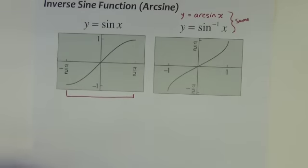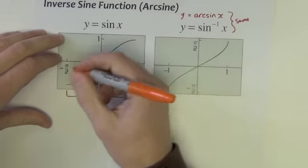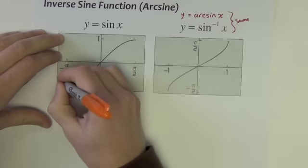Now, how did we find inverse functions, if you would recall? You take all the x, y points, you know, say this point here, negative pi over 2 comma negative 1.